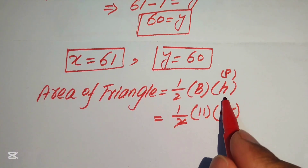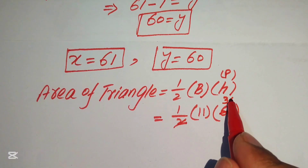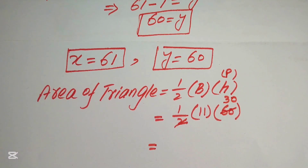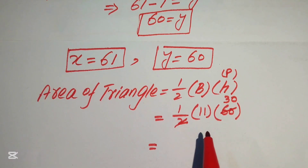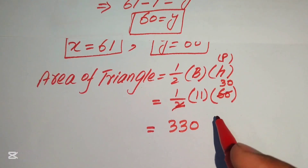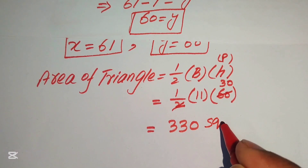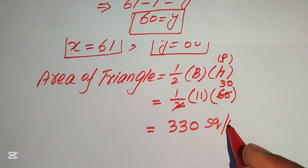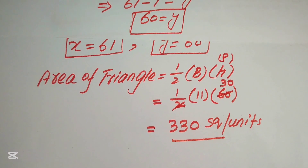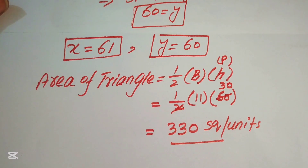Substituting the values: the base is 11 and the height is y equals 60. So the area equals one-half times 11 times 60, which equals 11 times 30, giving us 330 square units. This is the final answer. Thank you for watching, and please subscribe to my channel for more videos.